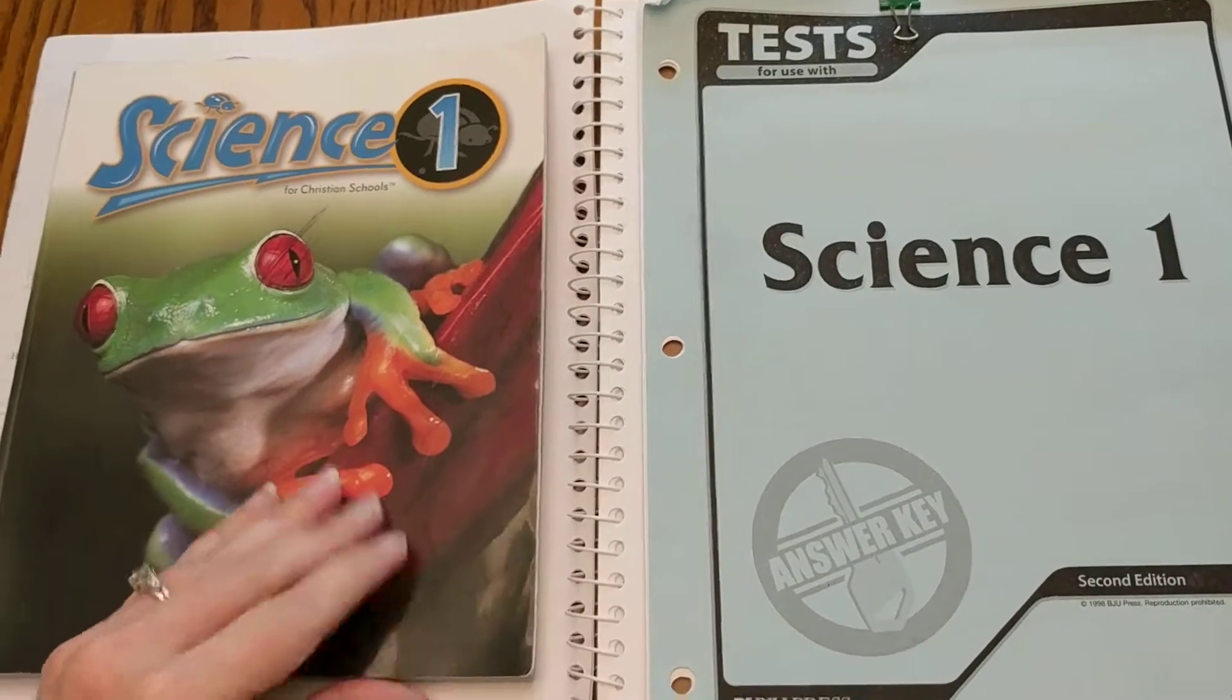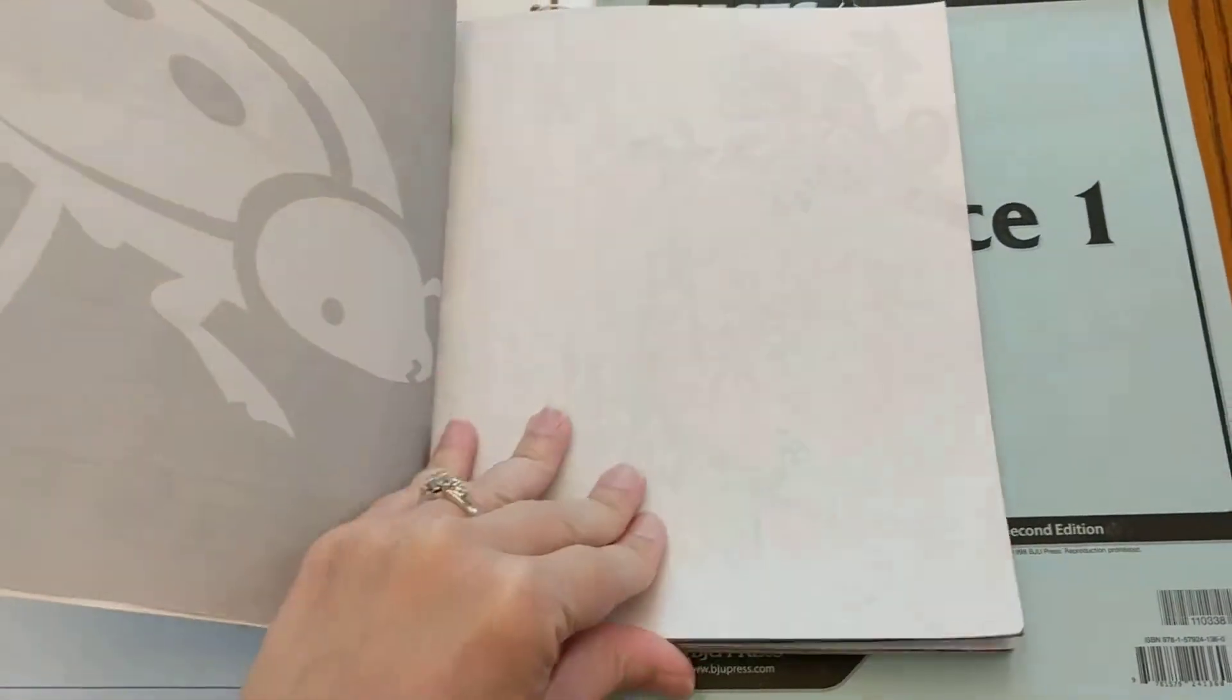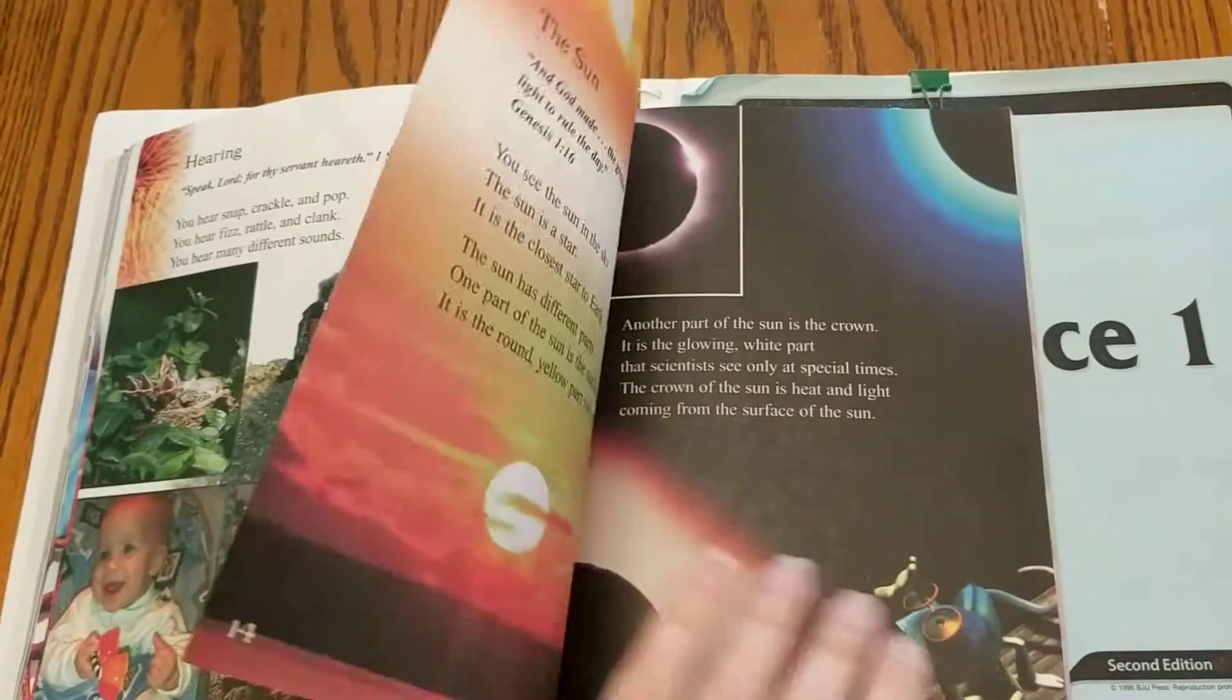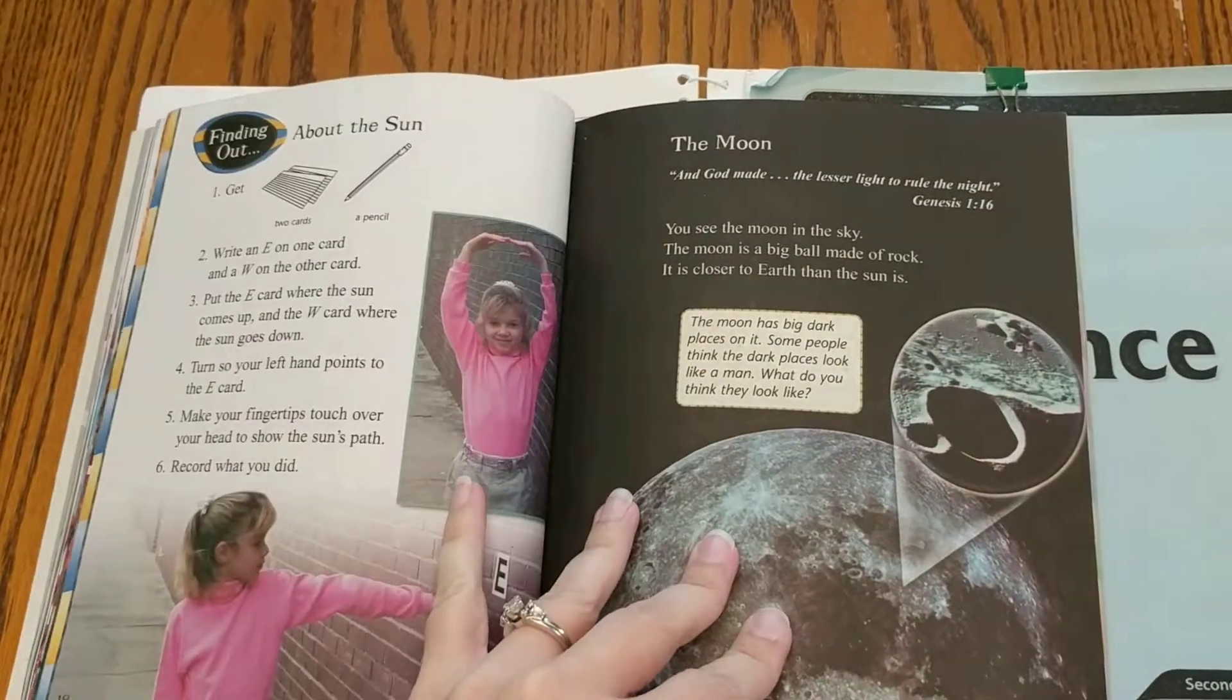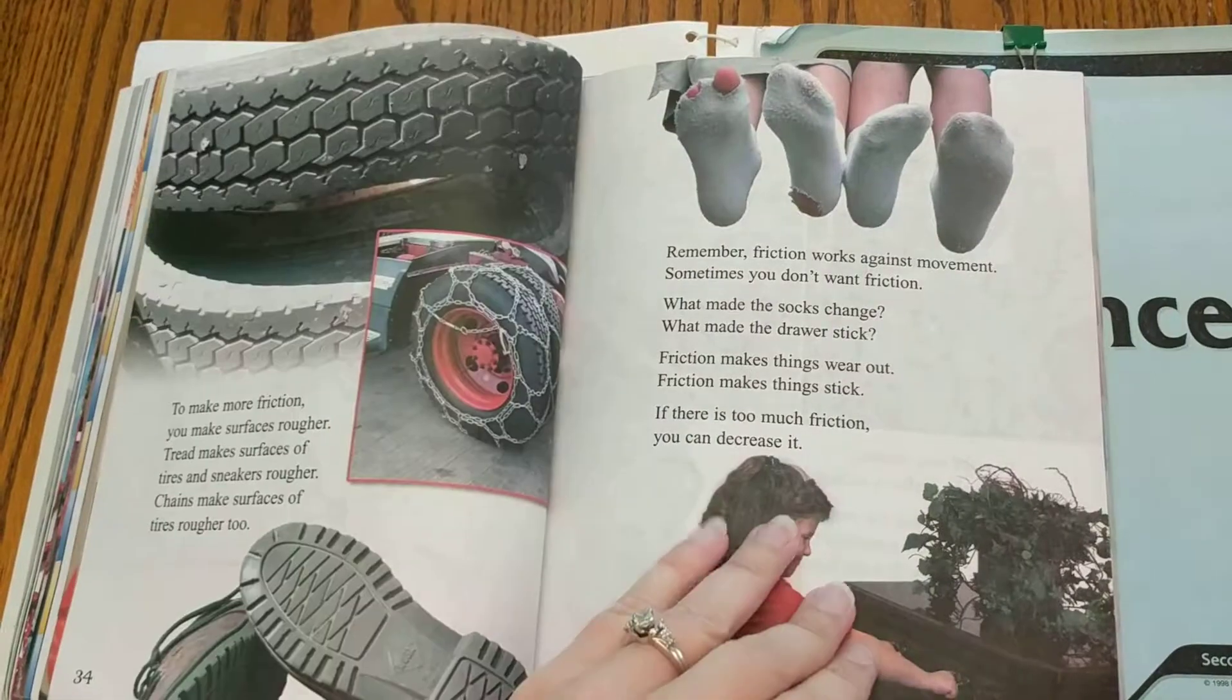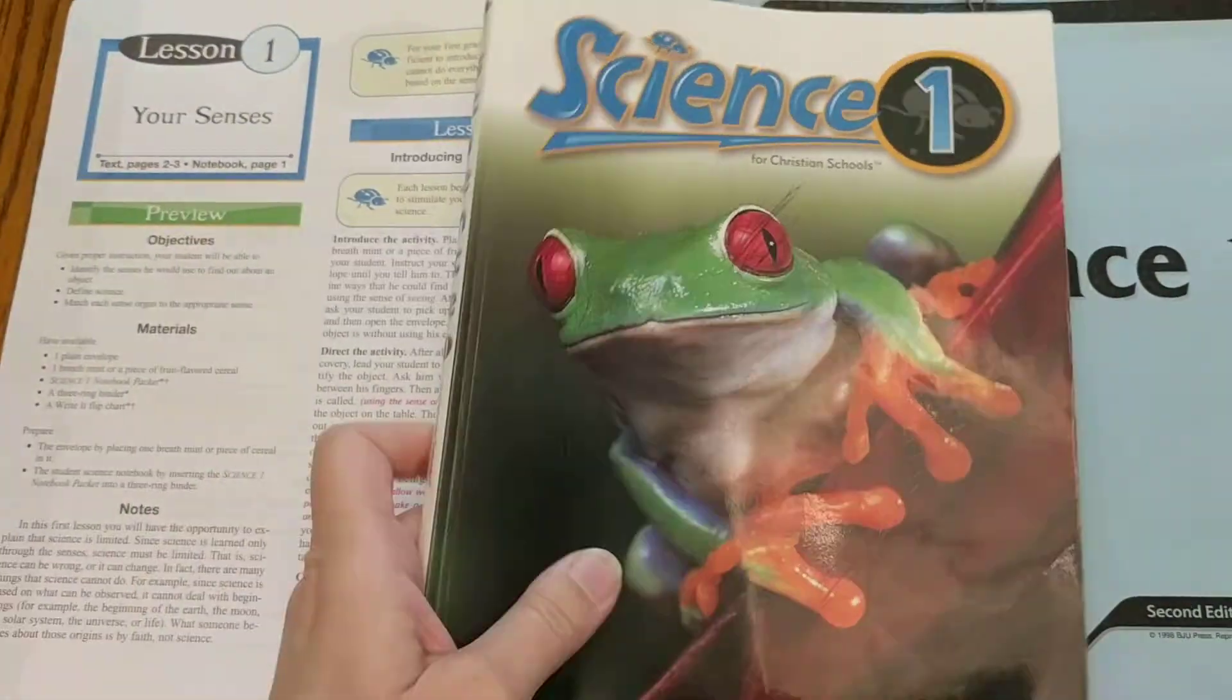It comes with a student text which is actually very colorful, and I think could be like a science reader. It's at reading level. You might have to help them out with a few things, but I think it's very doable to make this a science reader for them, if not at the beginning of the year, maybe by mid-year or end of the year.